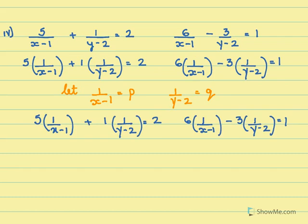Now we need to substitute. So for this 1 by x minus 1 we are going to put p here, and here for 1 over y minus 2 we will put q. Again here we will substitute, for this is our p, and this part we have taken it as q.